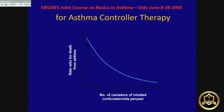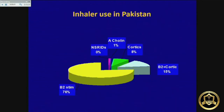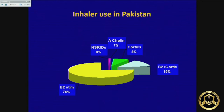Inhaled steroids act on all phases of inflammation and are the mainstay of asthma treatment. A study from New Zealand presented in Oslo showed that as the sale of inhaled corticosteroid canisters increased, asthma mortality started coming down. Almost all asthma patients need inhaled corticosteroids. Data from a pharmaceutical company shows that over 85 percent of our patients are only on bronchodilators and not using inhaled corticosteroids — and that is the main problem.